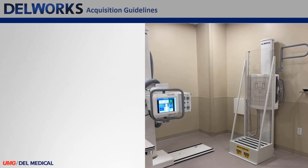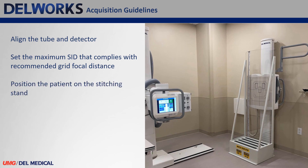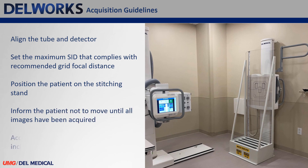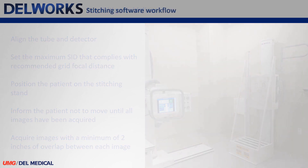First, it is important to prepare the room for your stitching exam. Align the tube and the detector, set the maximum SID that complies with the recommended grid focal distance, position the patient on the stitching stand, inform the patient not to move until all images have been acquired, and acquire images with a minimum of 2 inches of overlap between each image.